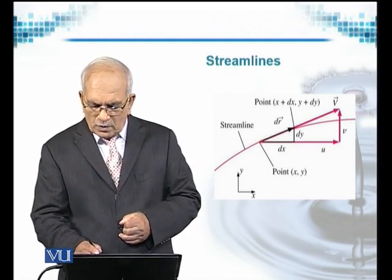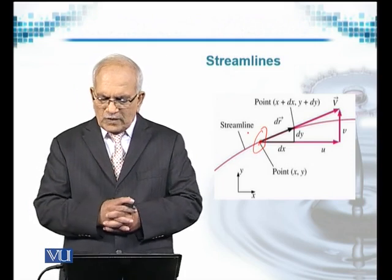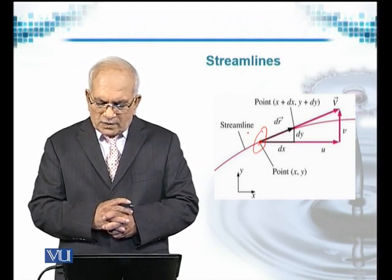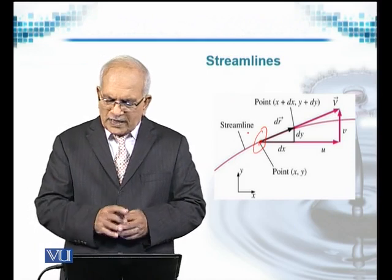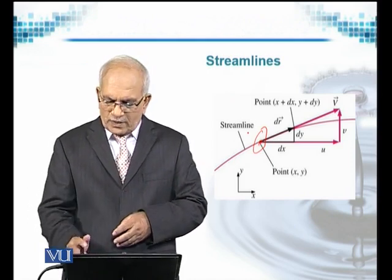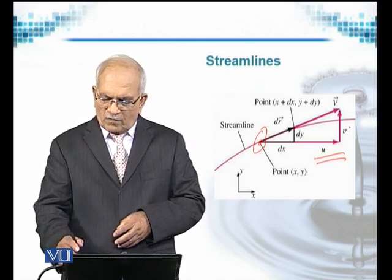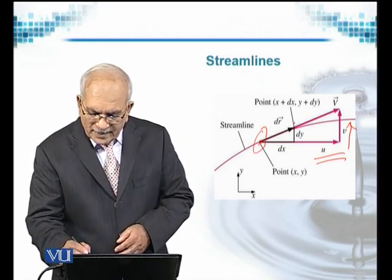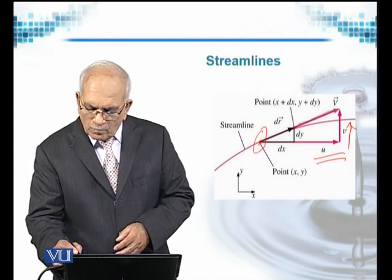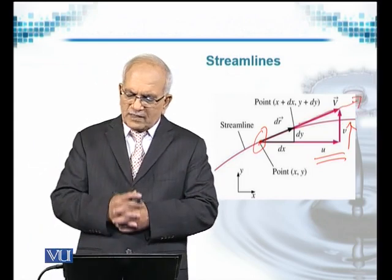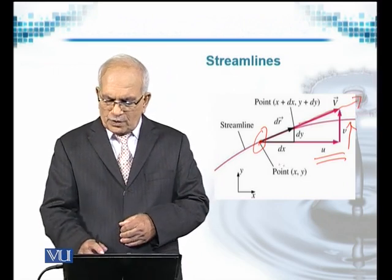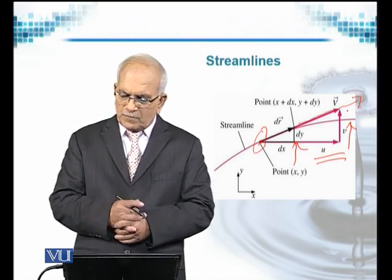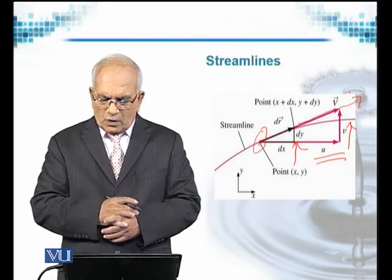If this is the point from where we start and we denote it by (x, y), then in the x direction the velocity component will be u, and in the y direction the velocity component will be v. This represents the velocity vector as a whole. u is its component in the x direction, and v is the component in the y direction.